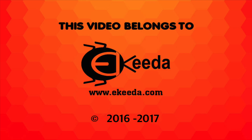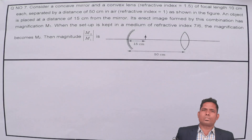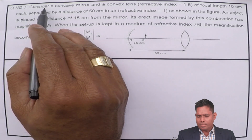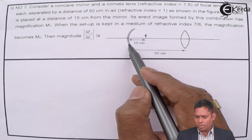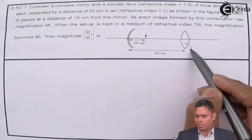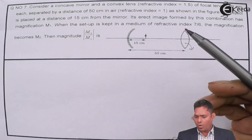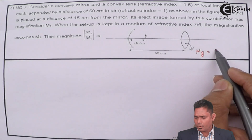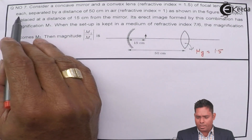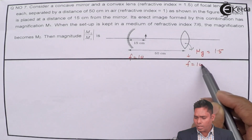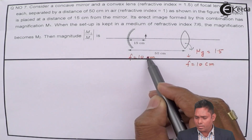So let us start question number 7. The question says: consider a concave mirror and a convex lens with refractive index 1.5. Obviously this is the refractive index of the lens — suppose it is glass with n = 1.5. The focal length of this mirror is 10 cm and this lens is also 10 cm. Both have the same focal length of 10 cm.